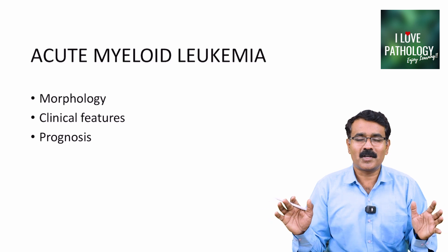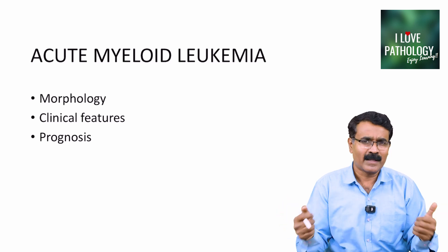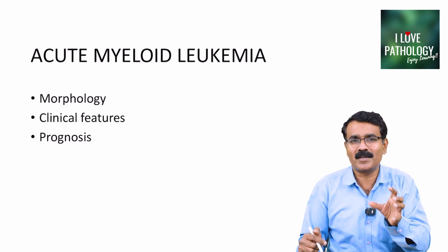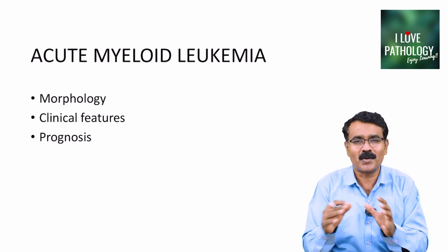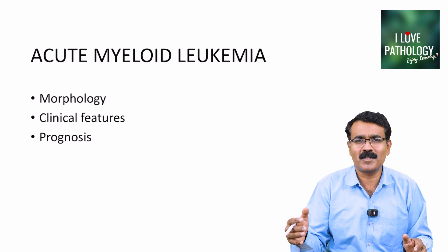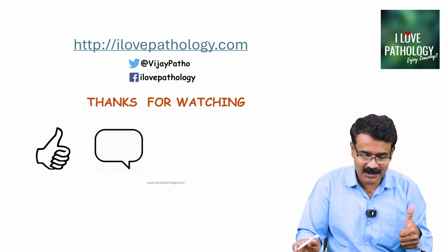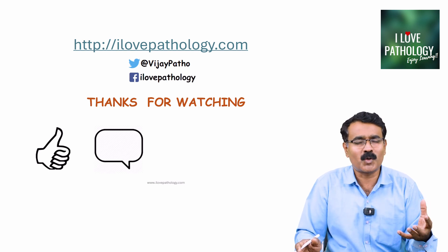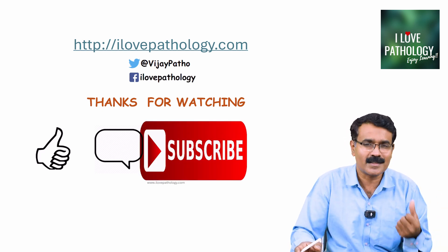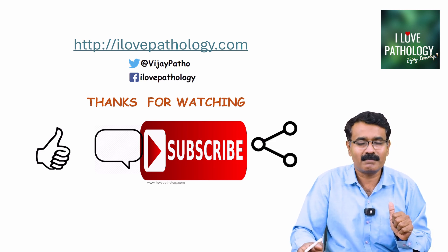That is all about acute myeloid leukemia. We discussed the morphology, clinical features, and prognosis. Having heard this three-part series on white blood cell neoplasms, you should have a good understanding of acute myeloid leukemia. In the next session, I will cover more white blood cell neoplasms. Thank you for watching — please like, comment with any topics you want covered, subscribe if you found this useful, and share with your friends.